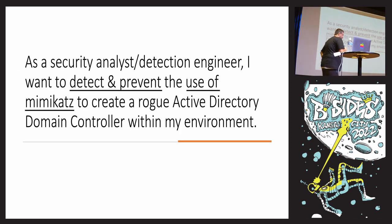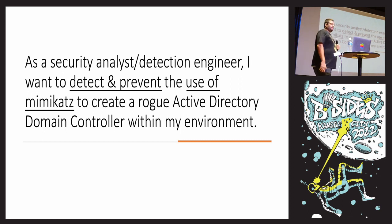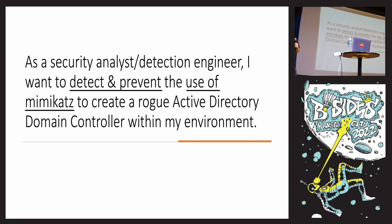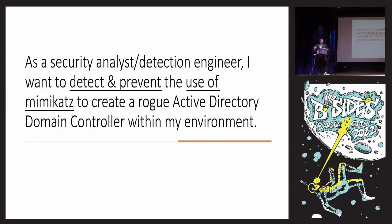The first thing I always do is create a user story — what are we trying to test? It's good to have this kind of outline to give you guide rails. For example: as a security analyst or detection engineer, I want to detect and prevent the use of Mimikatz to create a rogue Active Directory domain controller within my environment. This gives you a high-level scope. You might think, 'we really need to protect against malicious macros' — use that as a user story, then figure out all the details later. It gives you a starting point.